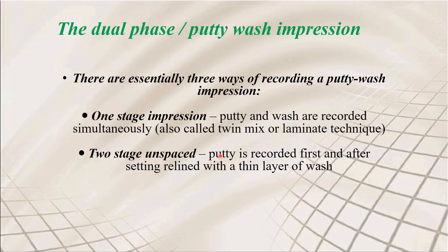Techniques can be one-stage or two-stage (single or double stages), described with or without a spacer. The one-stage impression is when putty and wash are recorded simultaneously — also called the twin mix or laminate technique. You take putty, spread it on the tray, layer the light body wash material on top, and press it against the maxilla or mandible to take the impression.